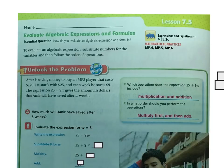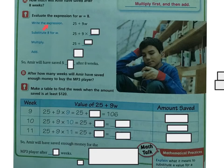Which operations does the expression 25 plus 9w include? It includes multiplication and addition because you have the plus and the 9w, which essentially means to multiply. In what order should you perform the operations? You would multiply first and then you would add because there's no parentheses and there's no exponents. How much will Amir have saved after 8 weeks? For the w, we're going to put 8 in that spot. So we write the expression, substitute 8 for w: 25 plus 9 times 8. We multiply: 9 times 8 is 72. Then we add: 25 plus 72 and we get 97. So Amir will save $97 after 8 weeks.